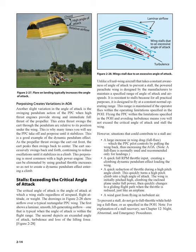Additional stall-contributing situations include: a quick full-RPM throttle input creating a climbing dynamic pendulum effect loading the wing; a quick reduction of throttle during a high-pitch angle climb, which quickly turns a high-pitch climb into a high angle of attack — the wing is initially pitched high climbing under full power, then quickly changes to a gliding flight path when the throttle is reduced; and a wind gust from flying in turbulent air. To prevent a stall, do not go to full throttle while holding a full flare, or as specified in the POH.